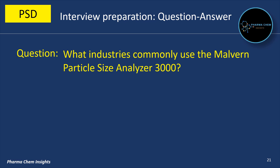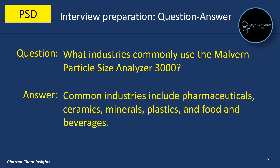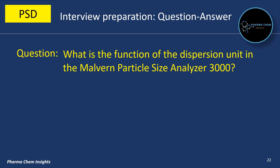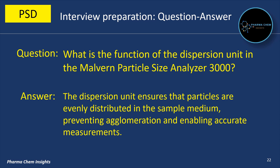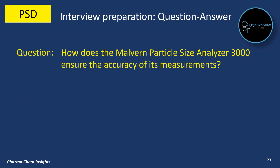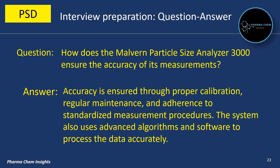What industries commonly use the Malvern Particle Size Analyzer 3000? Common industries include pharmaceuticals, ceramics, minerals, plastics, and food and beverages. What is the function of the dispersion unit? The dispersion unit ensures that particles are evenly distributed in the sample medium, preventing agglomeration and enabling accurate measurements. How does it ensure accuracy? Accuracy is ensured through proper calibration, regular maintenance, and adherence to standardized measurement procedures. The system also uses advanced algorithms and software to process the data accurately.